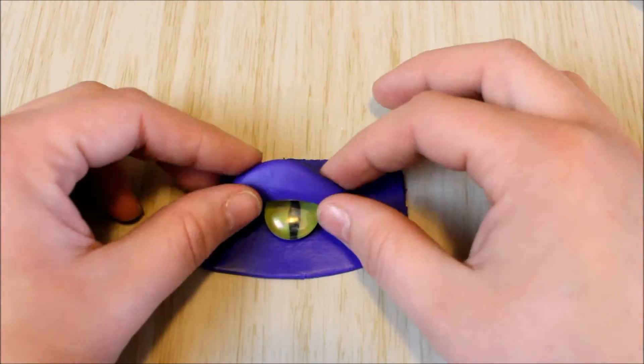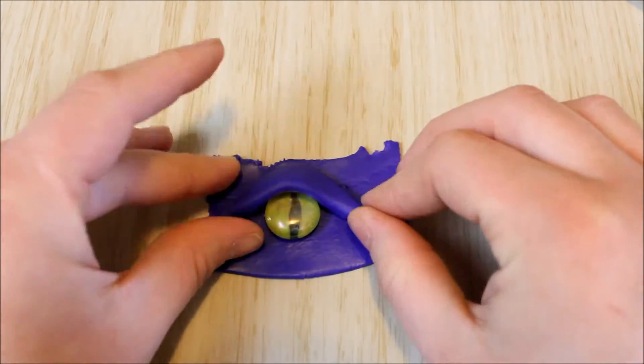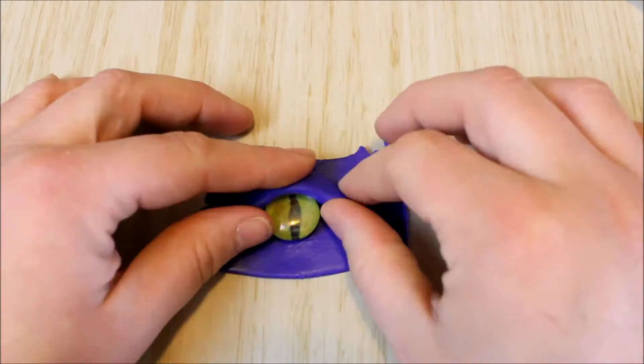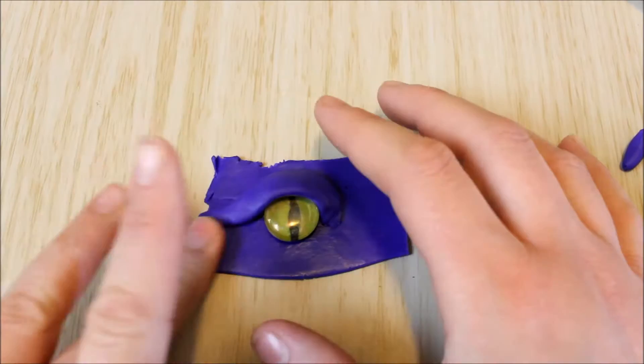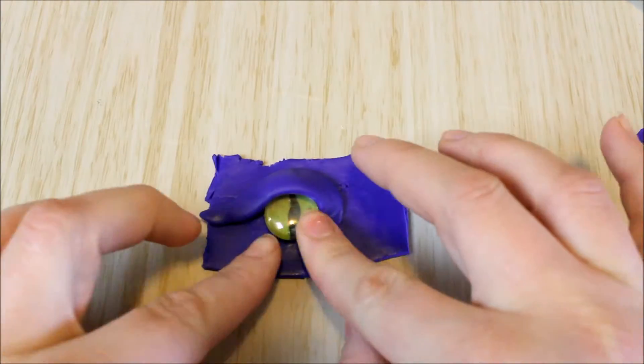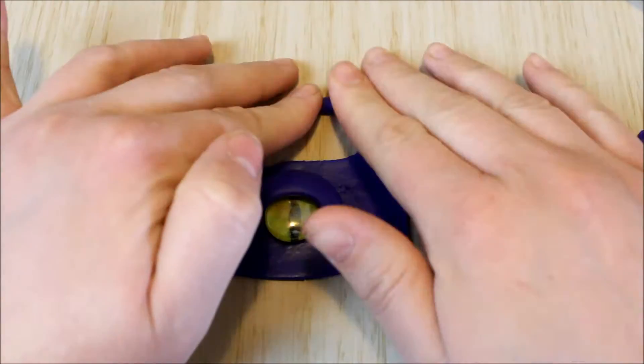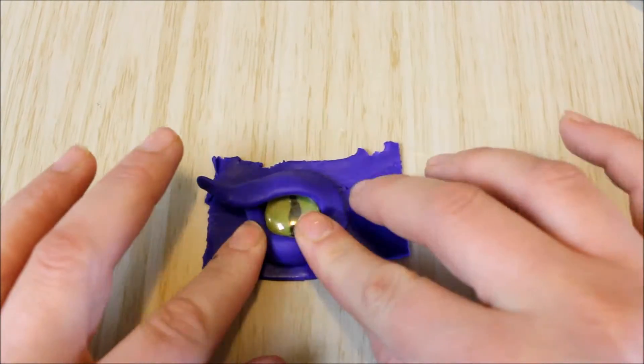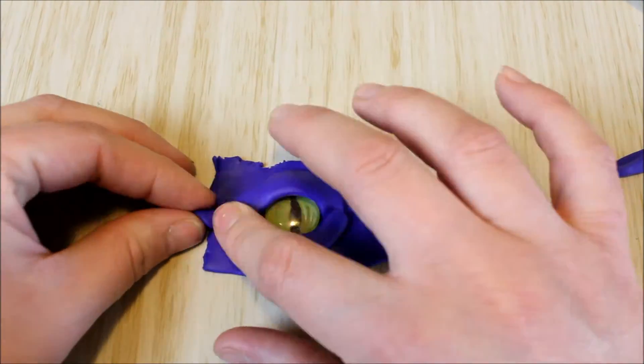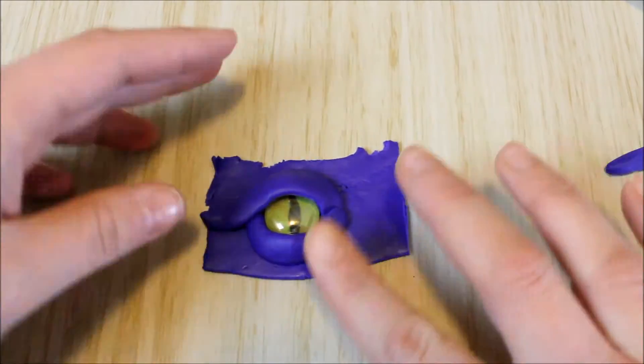I then went ahead and rolled out a nice fat snake of clay and created the top eyelid of my dragon's eye. I shaped the eye roughly on the top by having it tucked in and flicking out towards the side and then I created a smaller snake of clay and wrapped that underneath the eye to create the bottom eyelid as well.